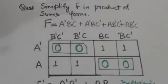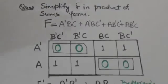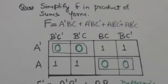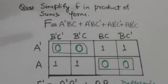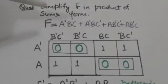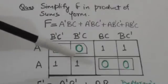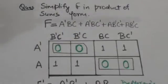In a K-map, a function is represented by the area enclosed by the squares whose minterms are included in the function. So I have marked those squares whose minterms are included in this function by 1. The area enclosed by the squares which are marked by 1 represents the function f.